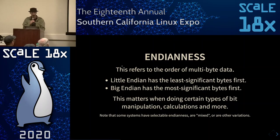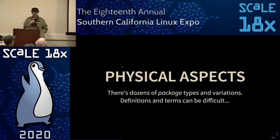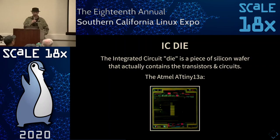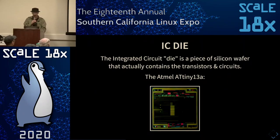Microcontrollers have endianness, which is important when transferring data between devices — basically which byte is first, the least significant or the most significant byte. In desktop development this rarely comes up. Physically, an IC is what's on a die — a piece of silicon. Here's a blow-up of an Atmel ATtiny13A, a really simple microcontroller. They're made of various sections of circuits comprised primarily of transistors etched into the silicon to form logic gates — that's what makes computers work.